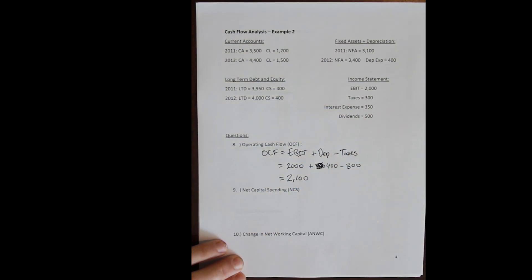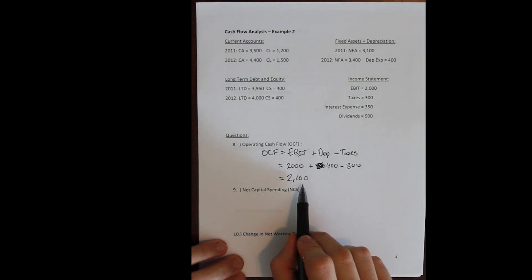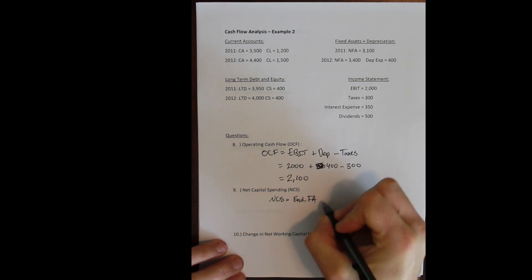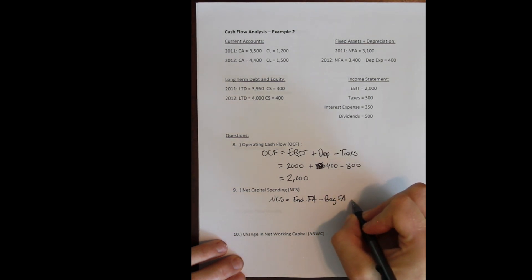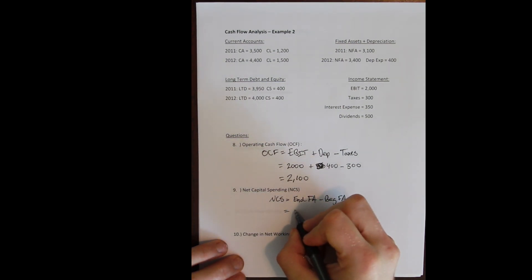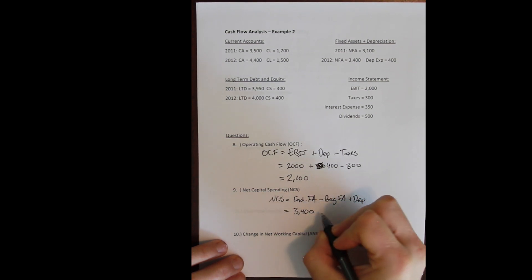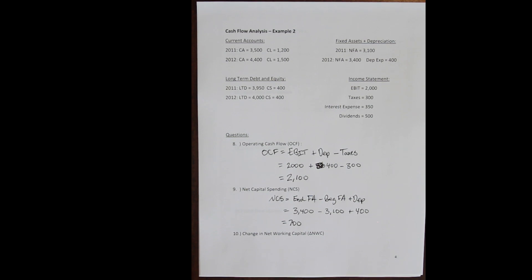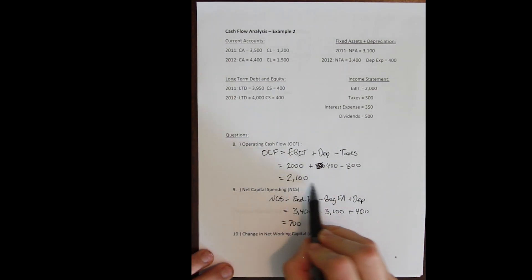Net capital spending: do we use any of this money to make new investments in fixed assets? Net capital spending is our ending fixed asset minus our beginning fixed asset, and we add depreciation back because we don't want to look at the accounting numbers, we just want to look at the actual purchases and sale of fixed assets. So our ending fixed assets in 2012, 3400, minus our beginning fixed assets in 2011 of 3100, we add back our depreciation expense and we see that we did spend some money this year buying new fixed assets. So we spent 700 of our leftover 2100.